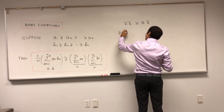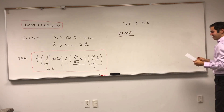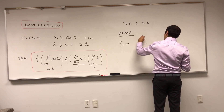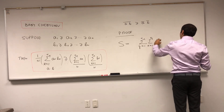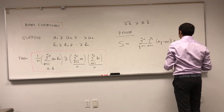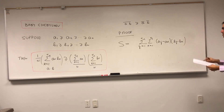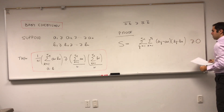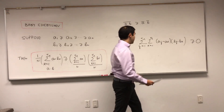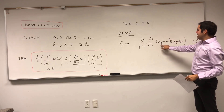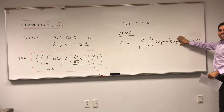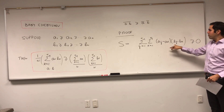Here is the proof — I really like it, it's very neat. Consider the following double sum: the sum over j from 1 to n and k from 1 to n of (aⱼ − aₖ)(bⱼ − bₖ). I claim this is always non-negative. Here's the reason: suppose j is smaller than k. Then since the a's are decreasing, (aⱼ − aₖ) is positive. But wait — the a's are decreasing, so if j < k, this is actually negative, and (bⱼ − bₖ) is also negative.